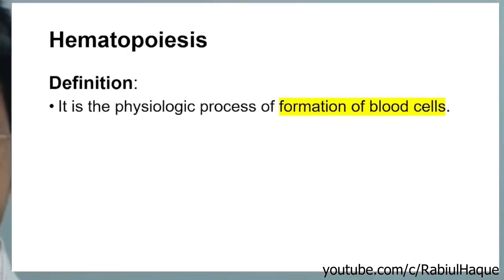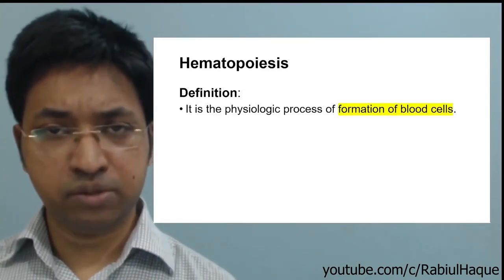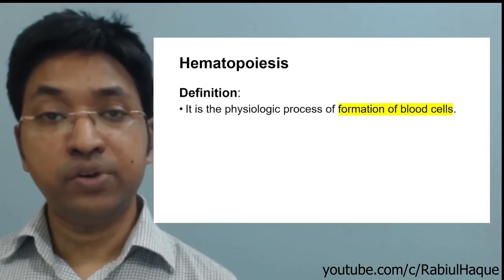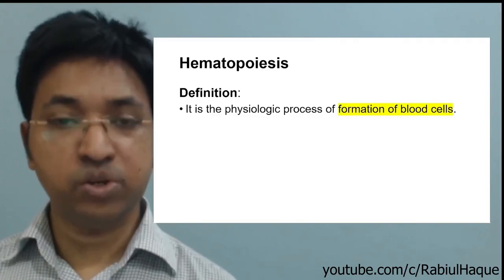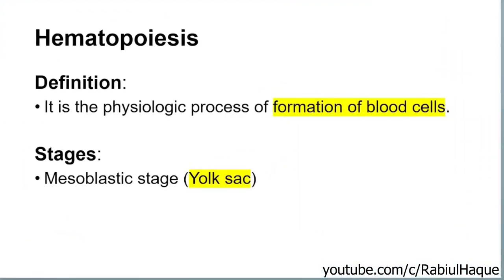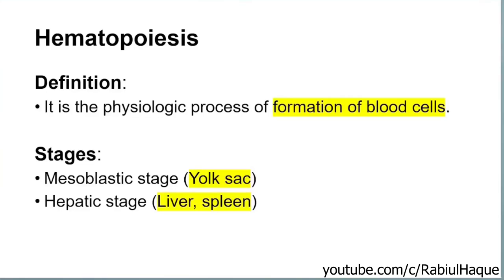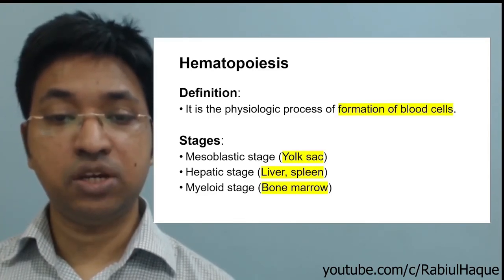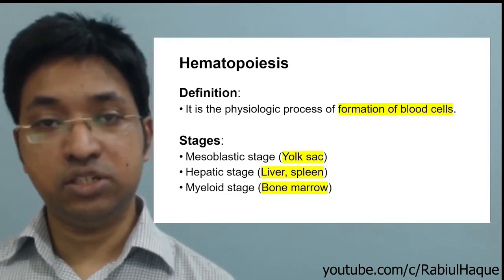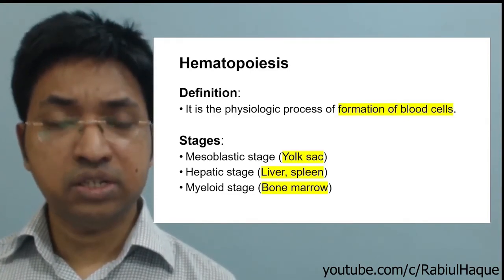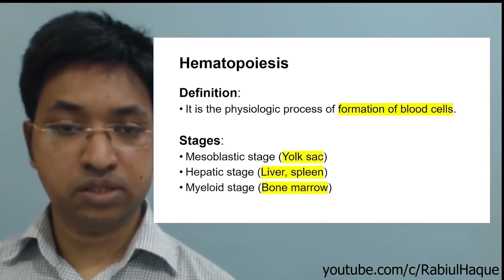One thing to remember: hematopoiesis is not occurring in only one location. Throughout our development, hematopoiesis occurs in various locations according to the stage of development. We can classify hematopoiesis in various stages. The first stage is known as the mesoblastic stage, during which hematopoiesis occurs in the yolk sac. The next stage is the hepatic stage, during which hematopoiesis occurs mainly in the liver and also partly in the spleen. The last stage is the myeloid stage, during which hematopoiesis occurs in the bone marrow.